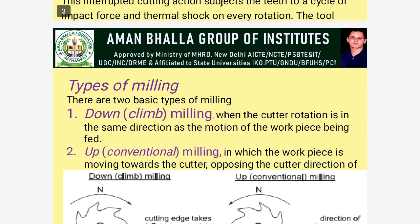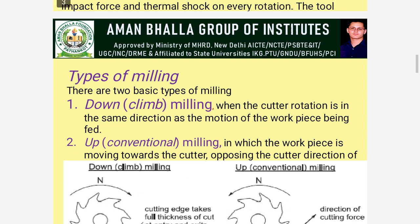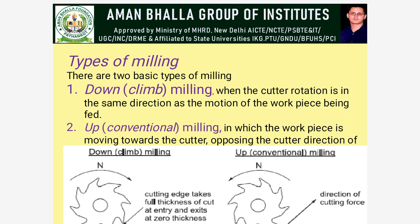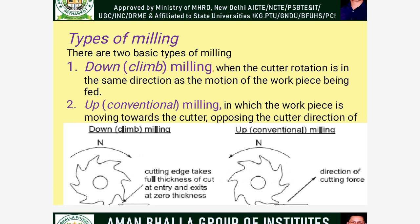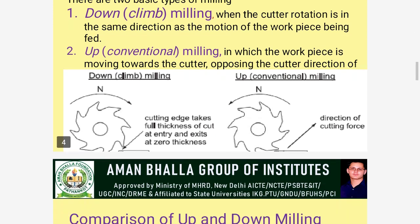Next are the types of milling. There are two types: up milling and down milling. Down milling is when the cutter rotation is in the same direction as the motion of the workpiece being fed. Up milling means the workpiece is fed in the direction towards the cutter. This is the diagram of down milling and up milling.